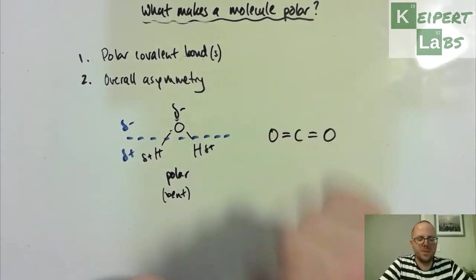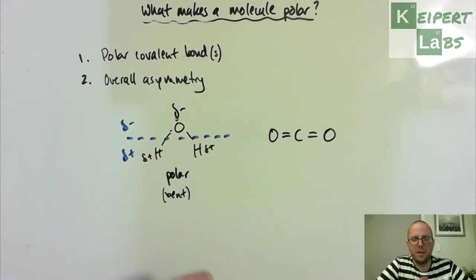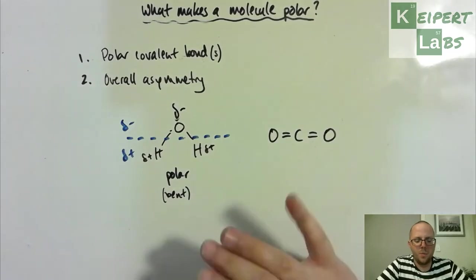We have polar covalent bonds, and we have overall asymmetry. The molecule as a whole has a positive and a negative end. That means that water is polar.